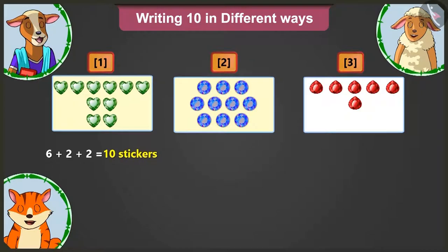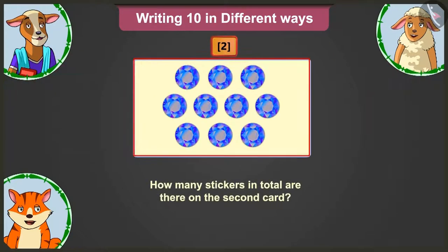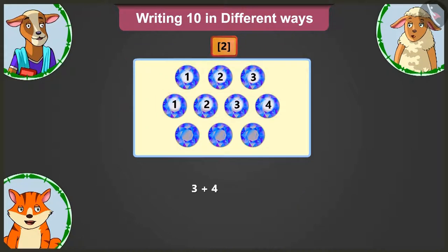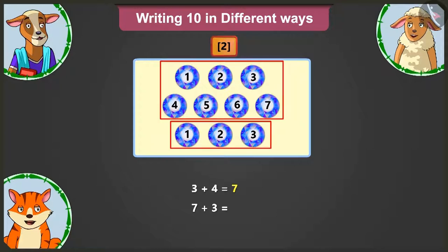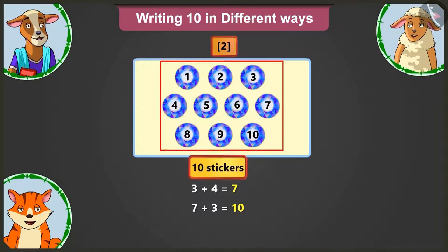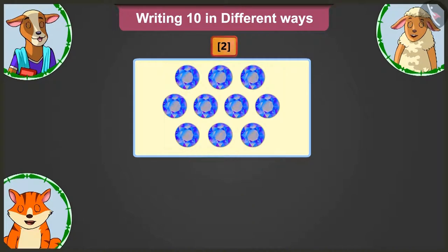Okay, Lily, now tell me how many stickers in total are there on the second card? Adding 4 to 3 gives 7, adding 3 to 7 gives 10. So this has 10 stickers in total. Well done, Lily. Now tell me, how will we write the sum of 10 here?